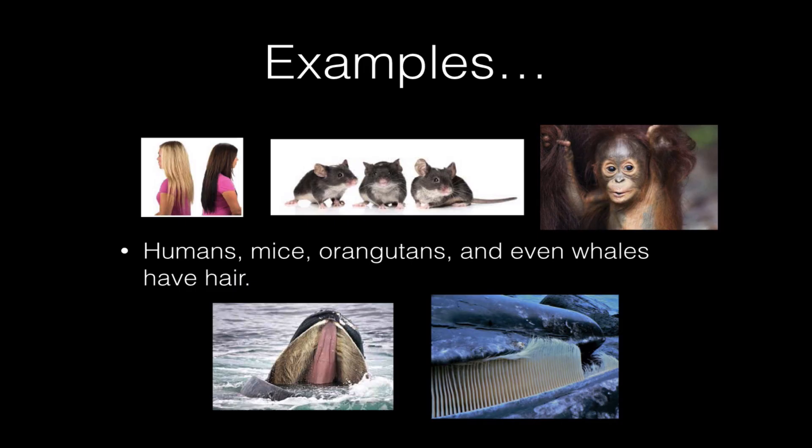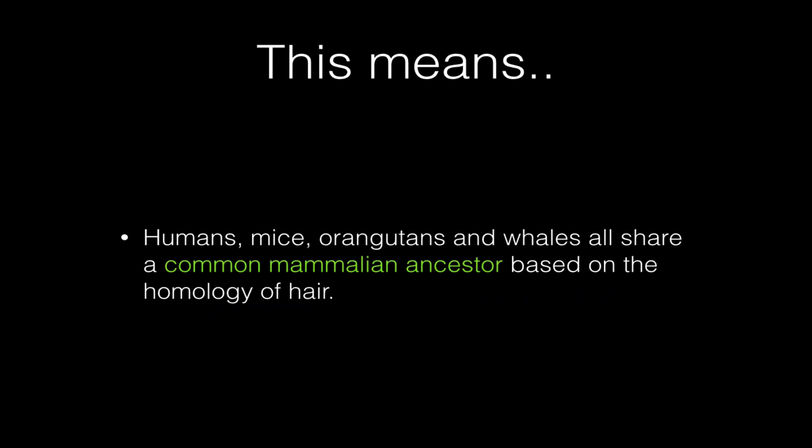And in this picture here, you can see the hair-like baleen, which baleen whales use to filter their food from the water. This structure is actually related to hairs. So the genes that control hair were inherited by all the descendants of this original mammal ancestor of these four different species. So this means that humans, mice, orangutans, and whales all share a common mammalian ancestor based on the homology of hair.